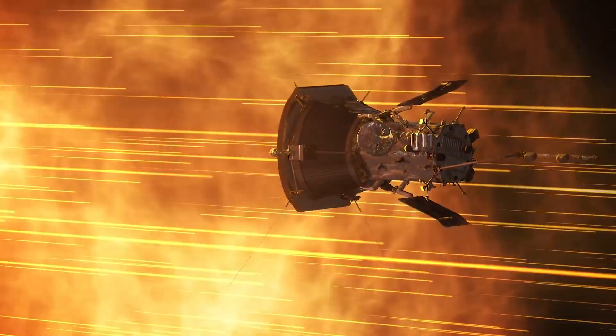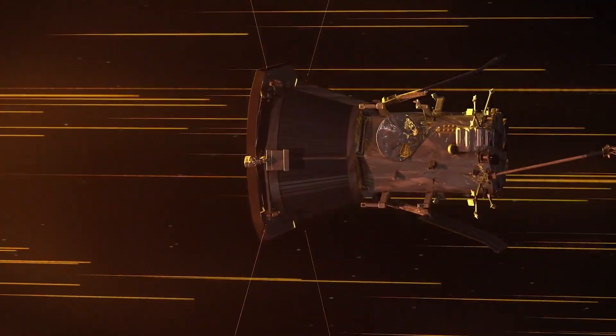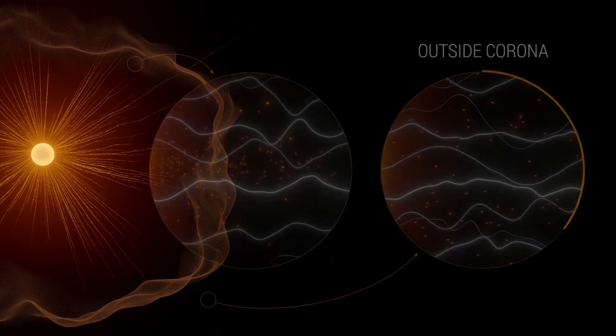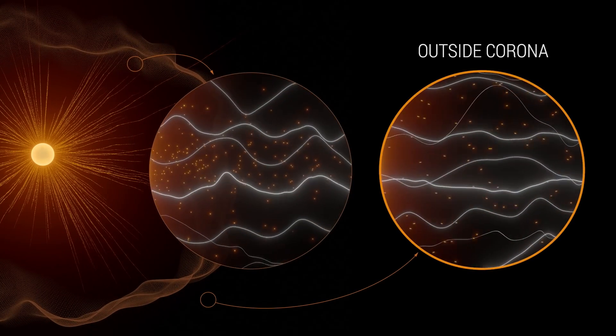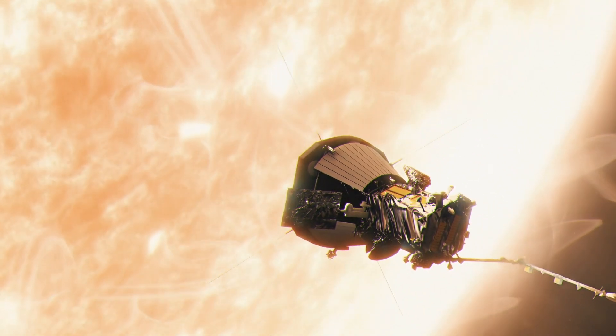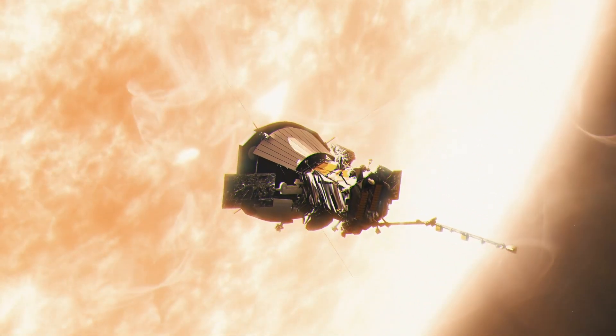The Parker Solar Probe, a brave spacecraft sent by NASA to explore the sun, is continuously moving closer to it. In the coming years, it may reveal important discoveries about the sun. The Parker Solar Probe has approached the sun more closely than any spacecraft before it.